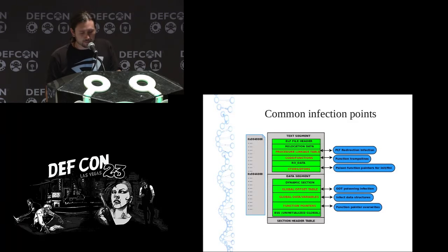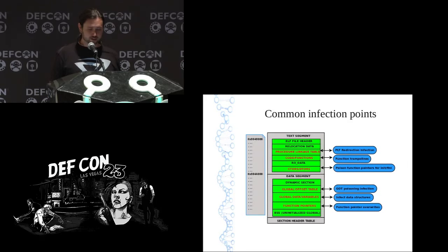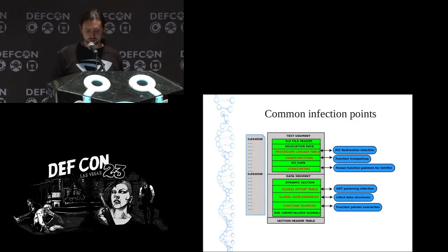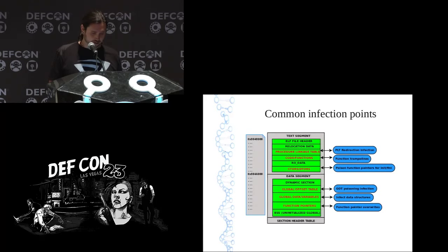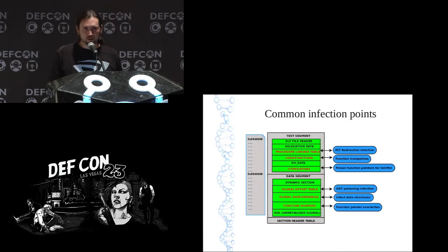Here is a diagram that shows the infection points visually. This is a binary in memory with text and data segments. The section header table doesn't get mapped into memory. In red you can see the different infection points: the procedure linkage table jumps can be hooked, function trampolines get placed in the code, function pointers can be overwritten in the constructors, the global offset table can be patched, and global data variables could be function pointers an attacker modifies. The dynamic section tags, like DT_NEEDED, can also get modified for shared library injection.